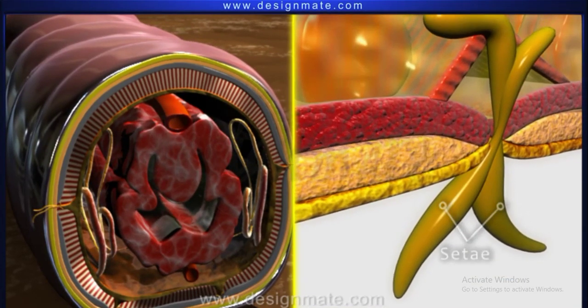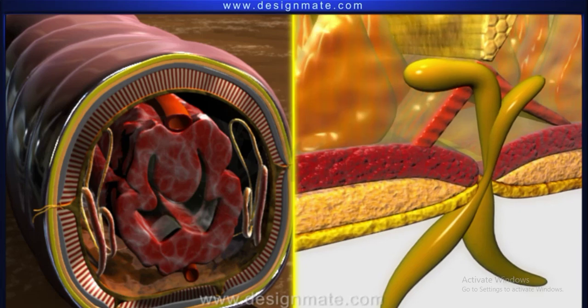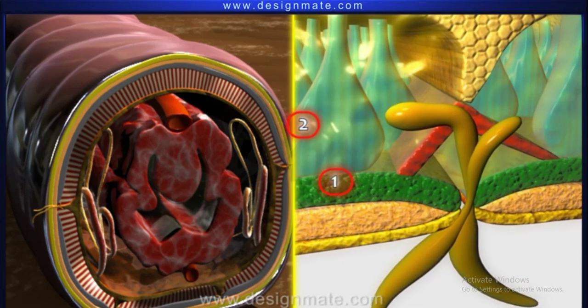If we study the body wall of earthworm carefully, we see that it has two sets of muscles.